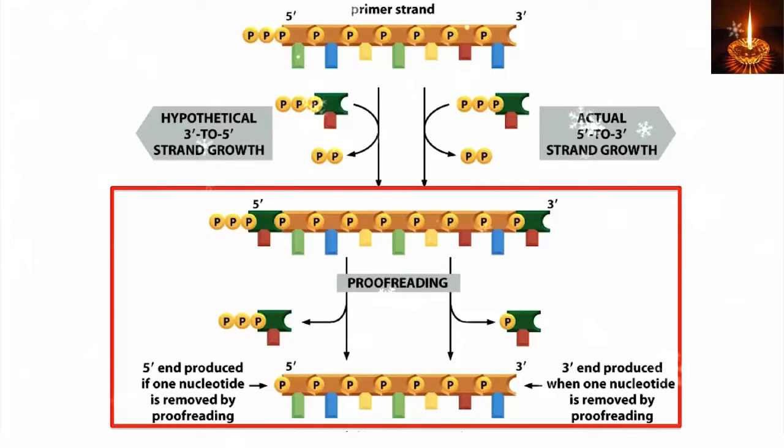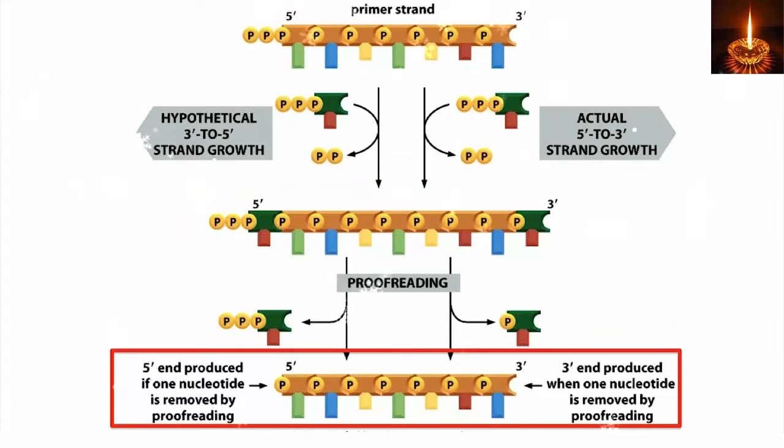The difference is that on the left, nucleoside triphosphate is removed, and on the right, nucleoside monophosphate is removed. This leaves a 5' monophosphate on the left and a 3' hydroxyl on the right.